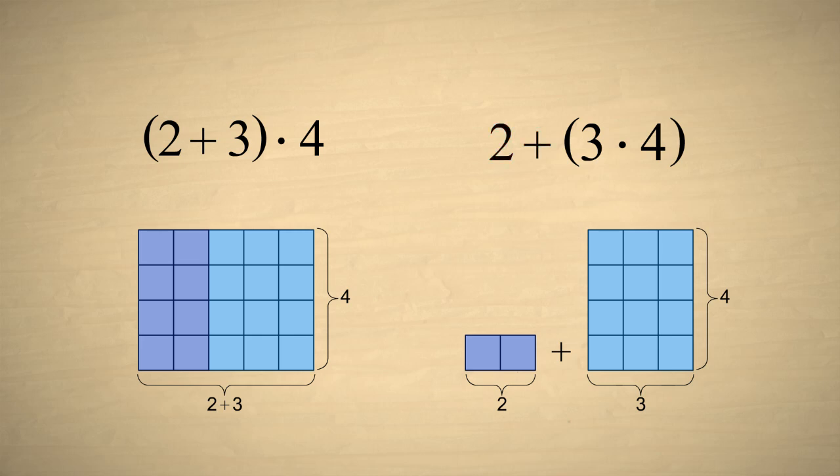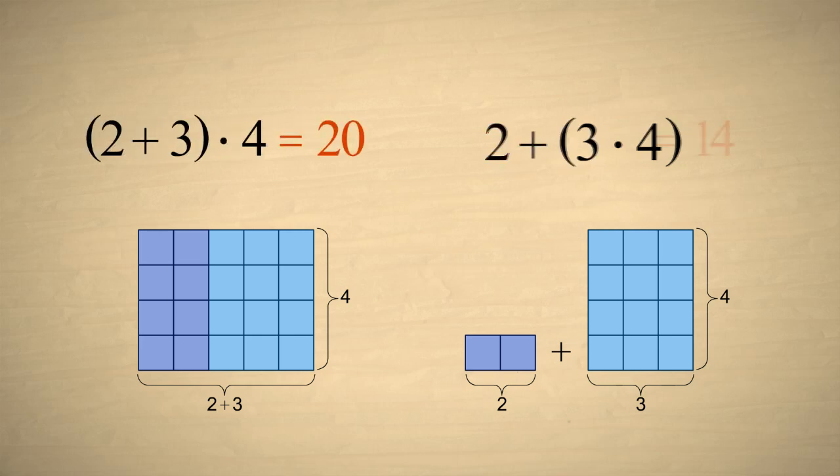The result in the first case is 20, while the result in the second case is 14. So the order of addition and multiplication does matter. The associative property does not apply to combinations of addition and multiplication.